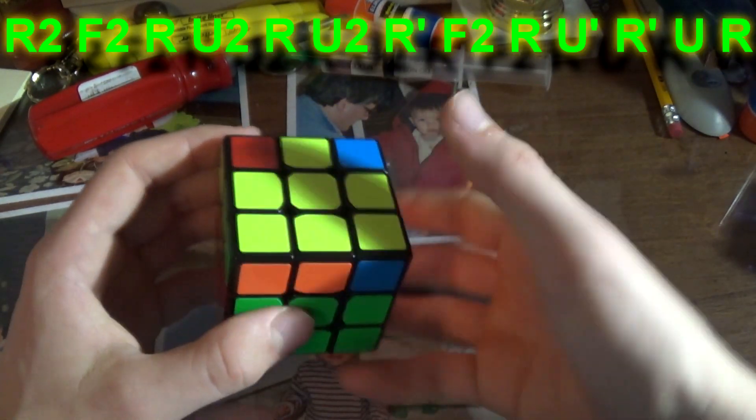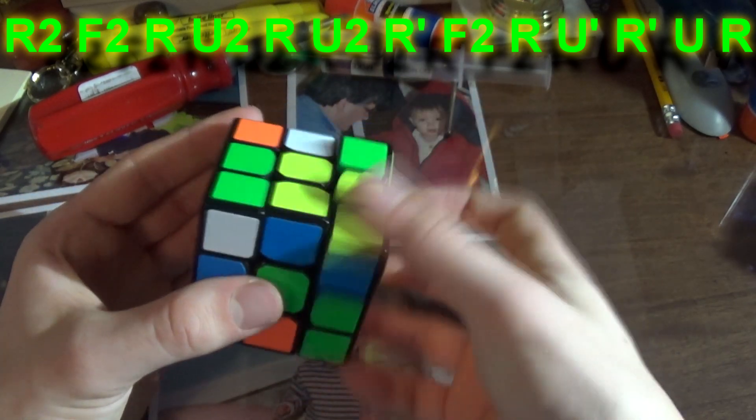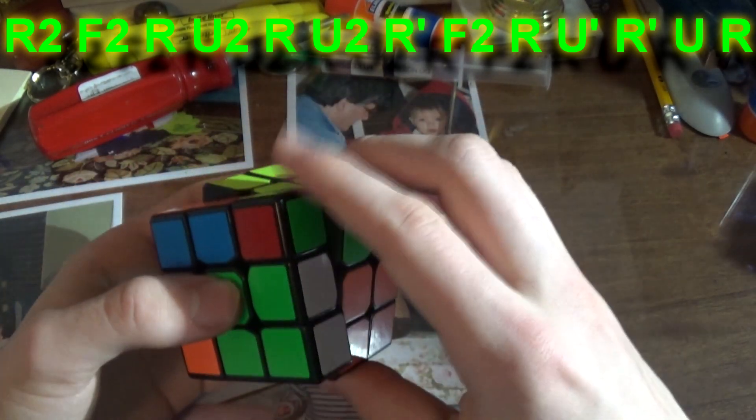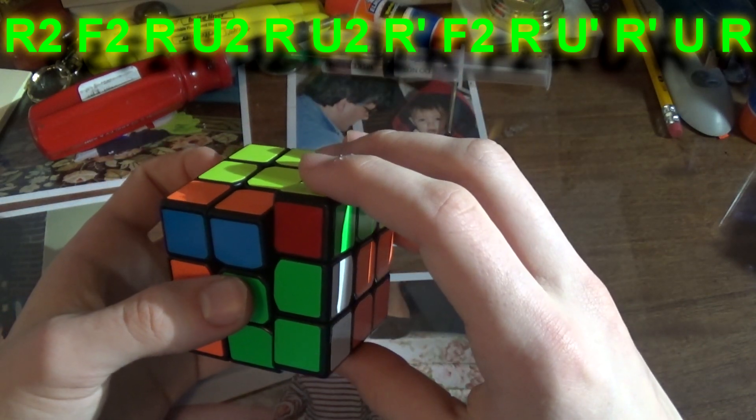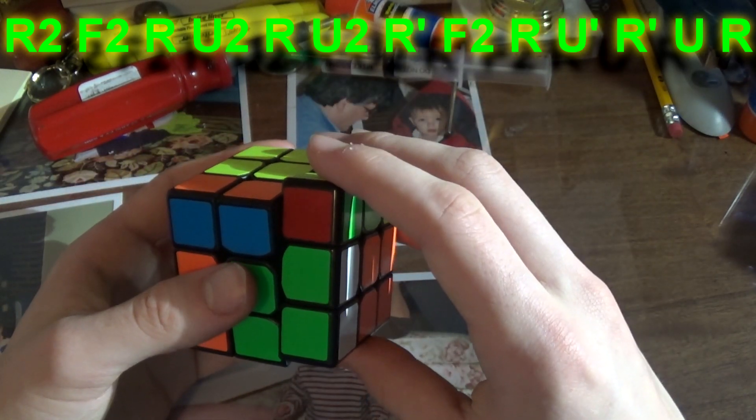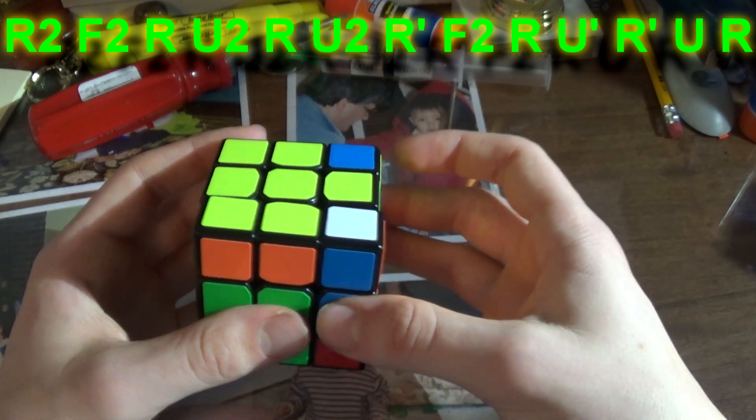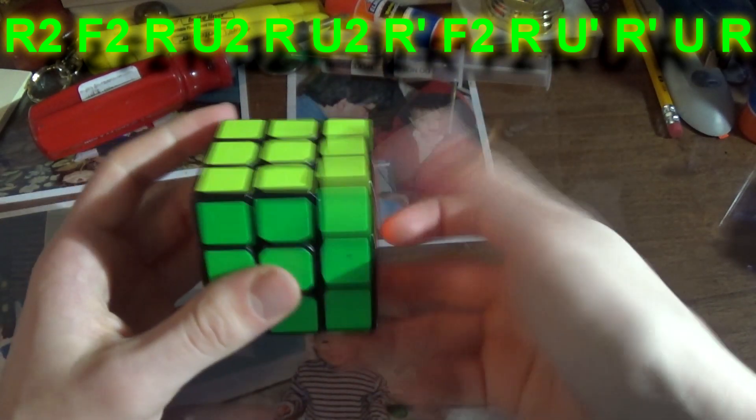This ALG goes R2F2, RU2, RU2, R'F2. So instead of F, sexy, and then R'F, R2, or yeah, like that, you just do F, R, and then you just insert this pair.